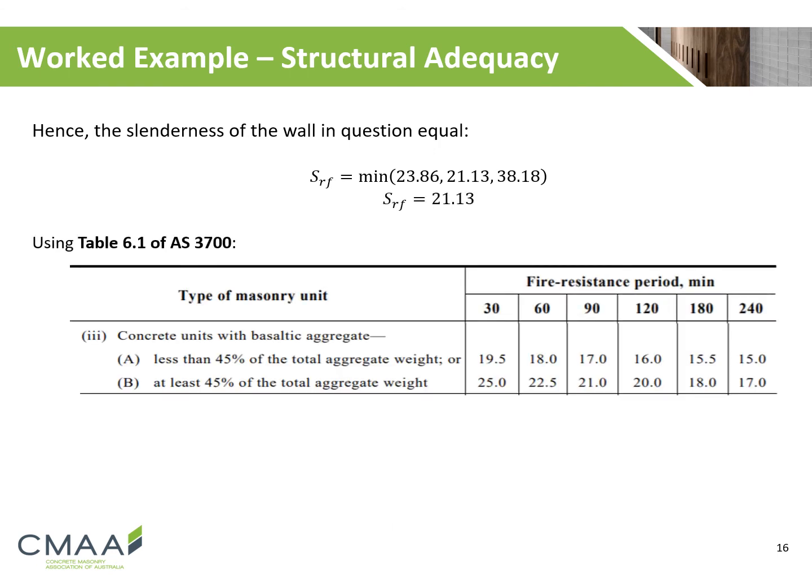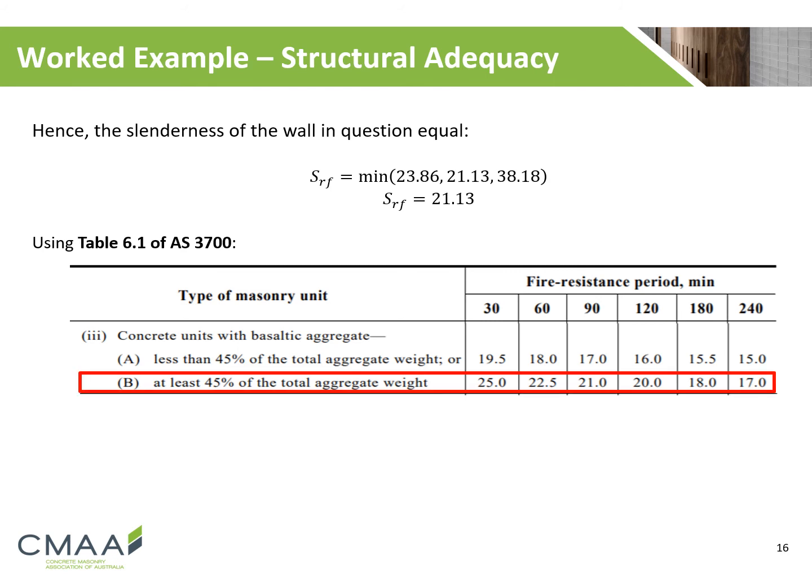Using Table 6.1 of AS 3700, the structural adequacy period of the wall can be determined. Our wall has a basaltic content greater than 45%, hence we will use Part B's maximum slenderness values. Our wall cannot meet a 90-minute fire resistance period, as its slenderness ratio exceeds the maximum allowable of 21.0. Hence, our structural adequacy value is determined to be 60 minutes.